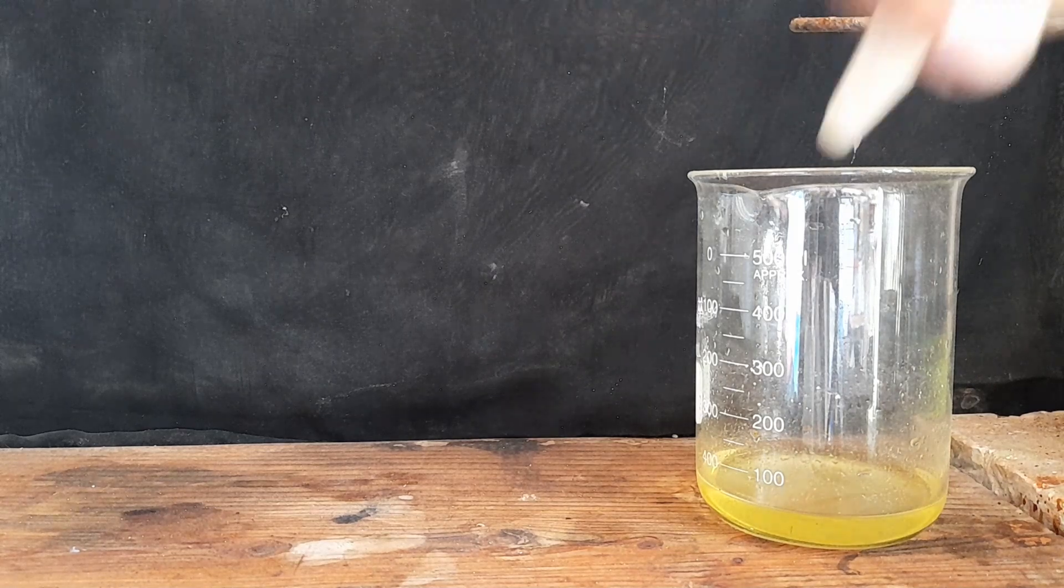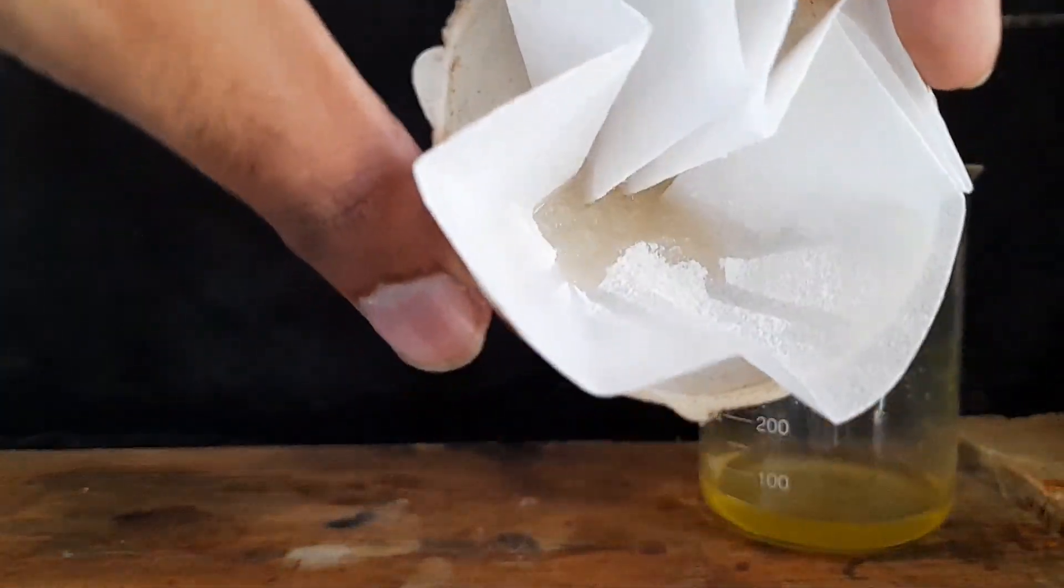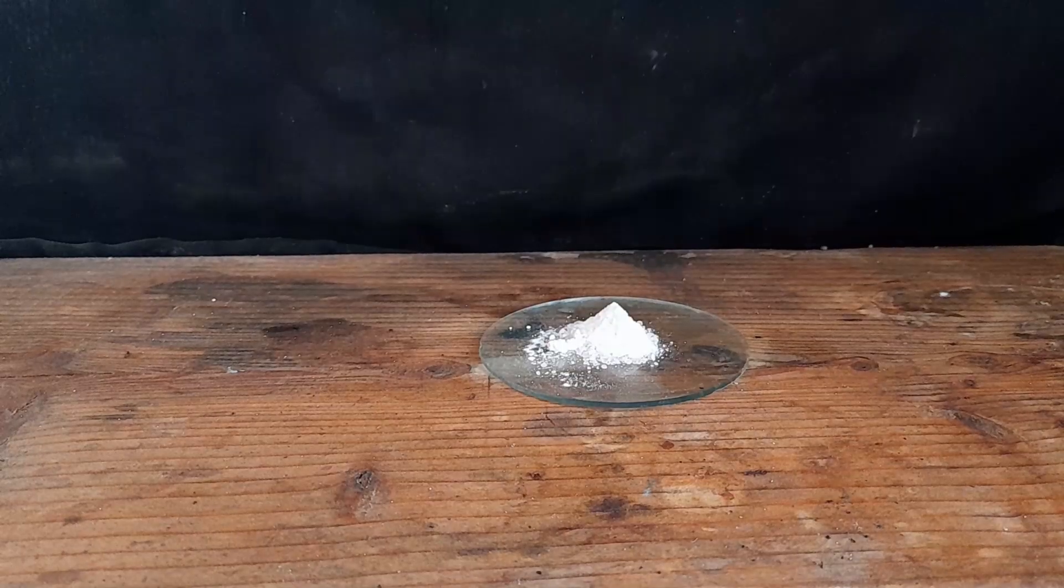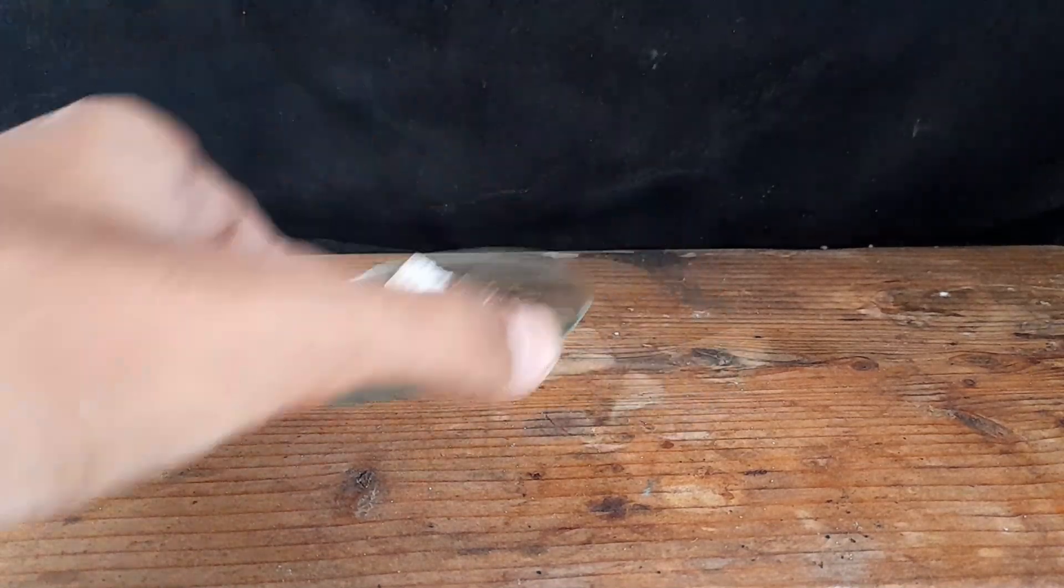Now remove aluminum oxide from filter paper and dry it. After drying this is the final yield.